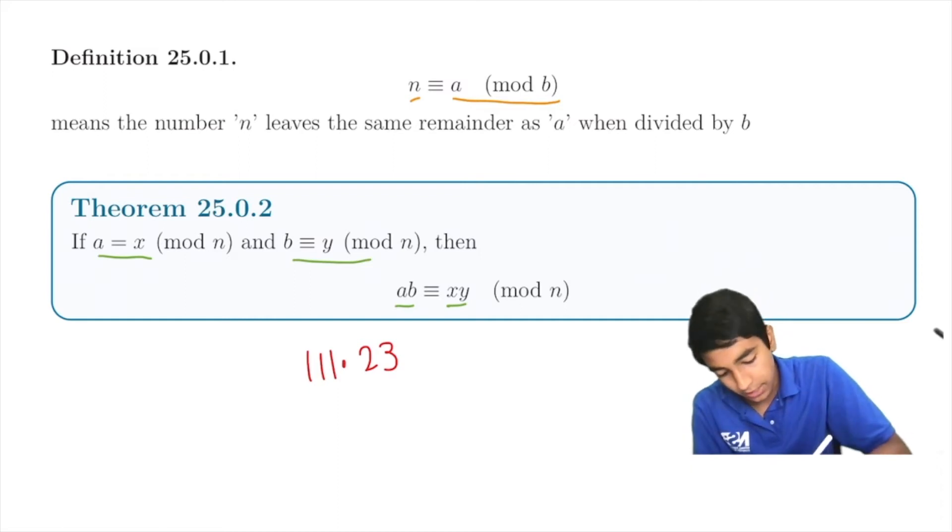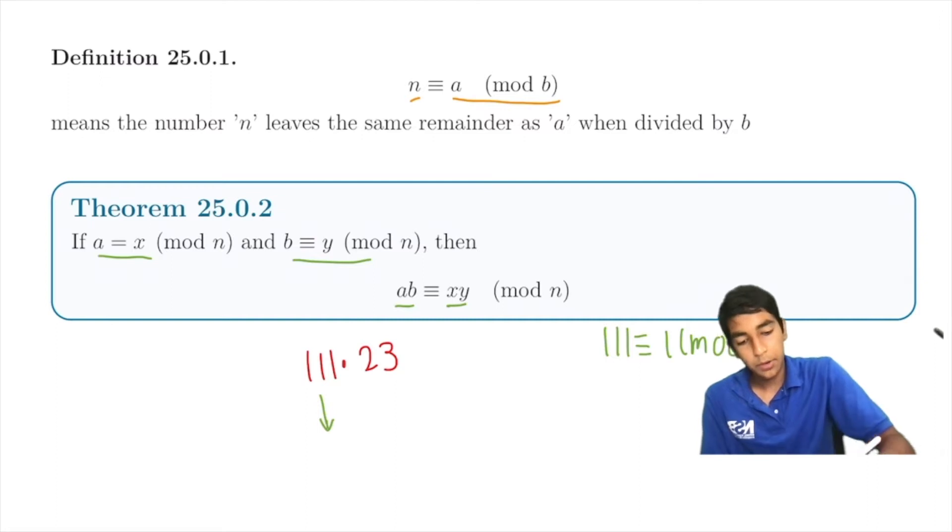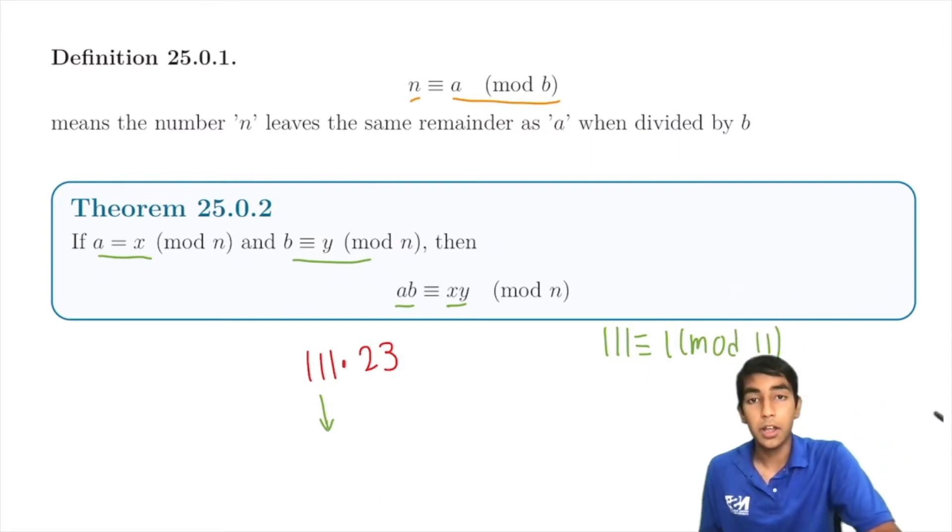You can just take this number mod 11. 111 is equivalent to 1 mod 11, because 1 and 111 leave the same remainder when divided by 11. So they're congruent, not equal, but congruent mod 11, as you can see here.